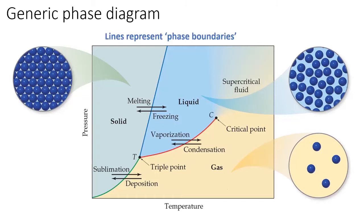These lines on the phase diagram represent phase boundaries. When temperature or pressure are changed such that the coordinates pass over one of these lines, the indicated phase change occurs.